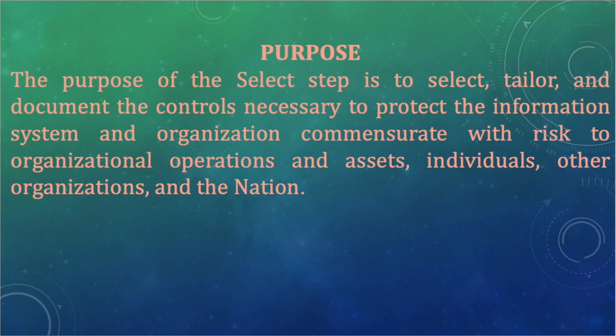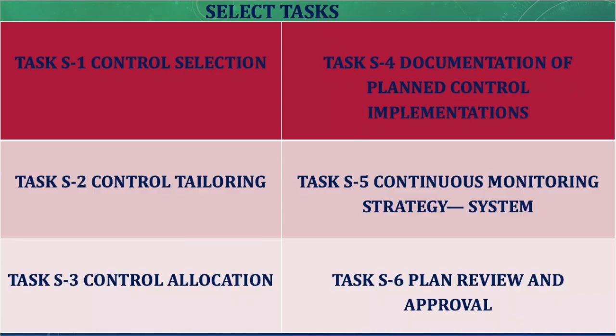Now let's look at the updated tasks according to NIST 800-37 Revision 2. There are six tasks under the Select step: Task 1 is control selection; Task 2 is control tailoring; Task 3 is control allocation; Task 4 is documentation of planned control implementation; Task 5 is continuous monitoring strategy at the system level; and Task 6 is plan review and approval.